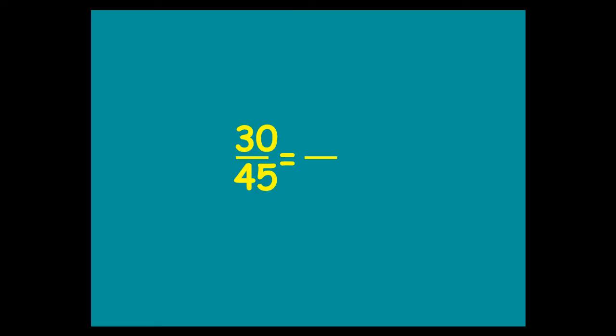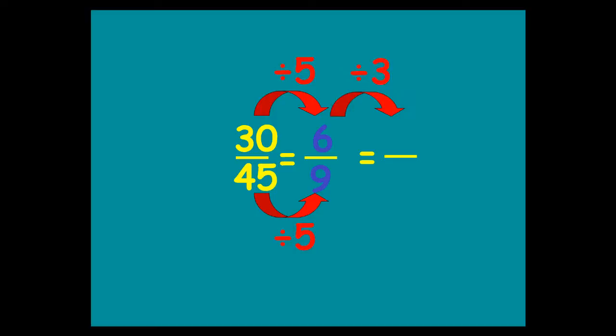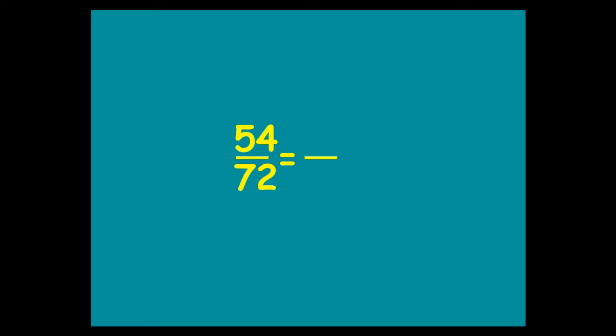30 over 45 — what goes into 30 and 45? You can divide top and bottom by 5 — you get 6 on the top, you get 9 on the bottom. Can you go any further? Yes, because 6 and 9 are both in the 3 times table. So divide top and bottom by 3, you end up with 2 on the top, 3 on the bottom, and that's how you've reached the end of the road. 2 thirds is your final answer.